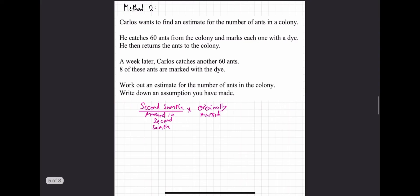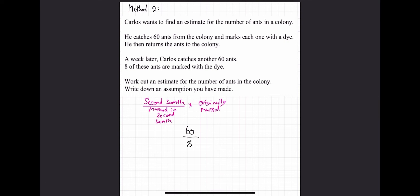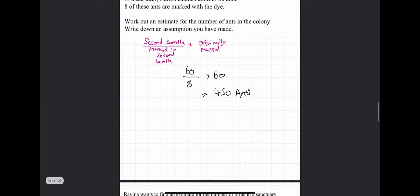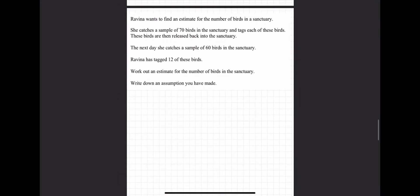This is the question we did earlier. And to do it, you take your second sample. And in her second sample, it's 60. Divided by marked in second sample, which is 8. Times by originally marked 60. And that just tells you straight away. 60 over 8 times 60. It's 450, 450 ants. And then the next one. What is our second sample? 60 is our second sample. Marked in our second sample is 12. And then times by originally marked is 70. So, 60 divided by 12 times 70 is 350.